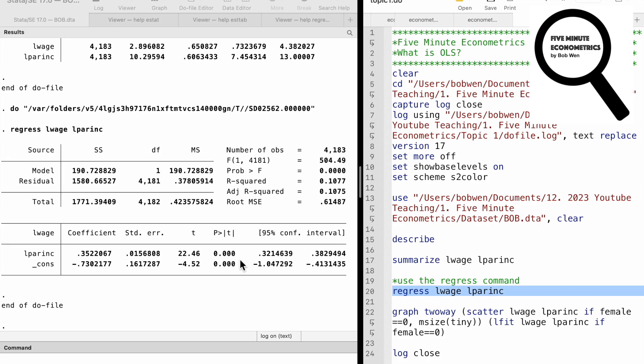But this simple regression is almost inevitable to suffer from omitted variable bias.